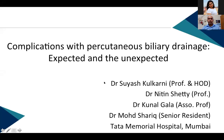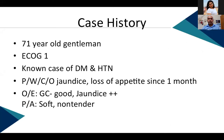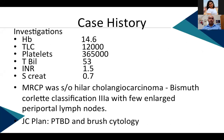Applications with percutaneous biliary drainage - the expected and the unexpected. The case: a 71-year-old gentleman, ECOG 1, with known diabetes and hypertension, presented with complaints of jaundice and loss of appetite for one month. On examination, GC was good, the patient was deeply icteric, and per abdomen was soft. Baseline investigations showed significantly elevated bilirubin levels and slightly raised counts.